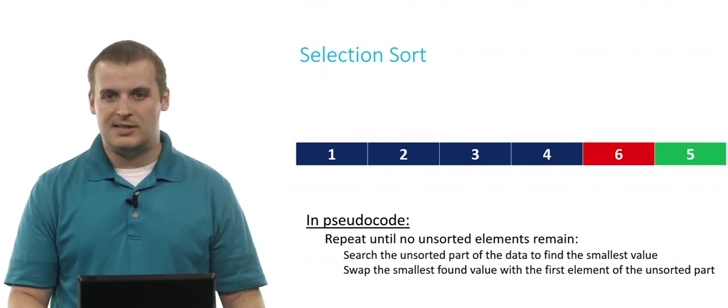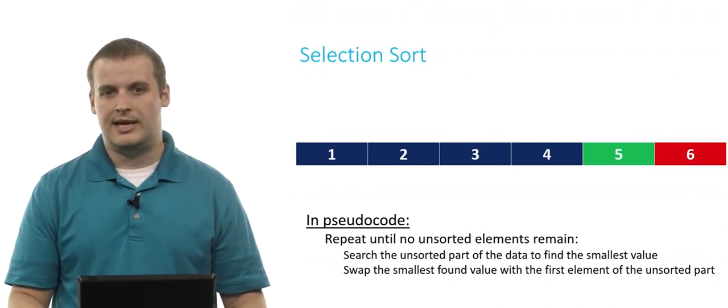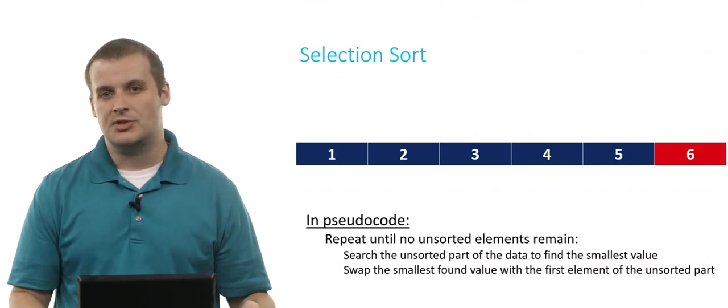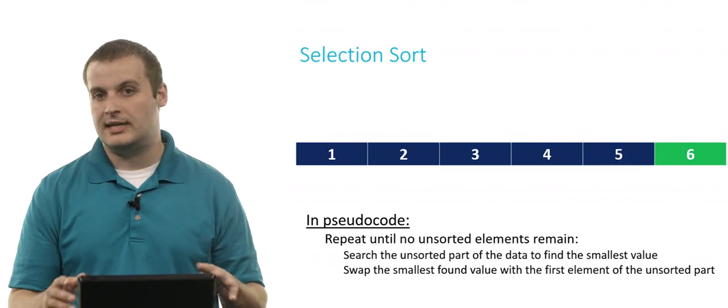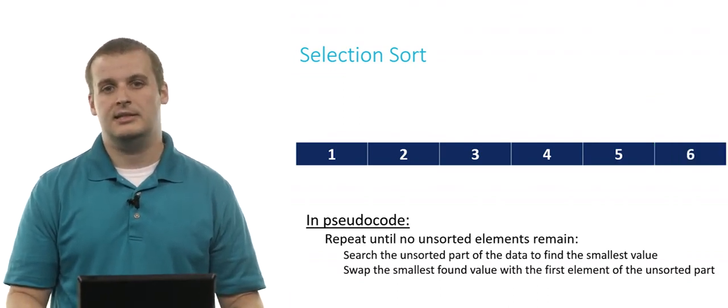We find that 5 is the smallest element. We swap it with the first element of the unsorted part, and now 5 is sorted. And then lastly, our unsorted part consists of just a single element. So we search through it. We find that 6 is the smallest and, in fact, only element, and then we can state that it is sorted.